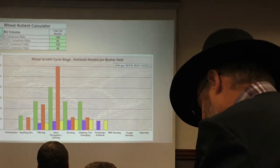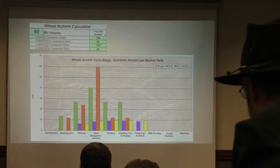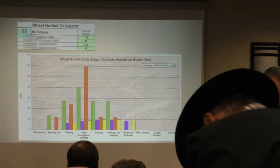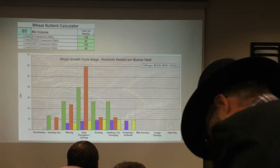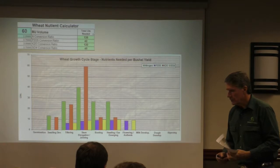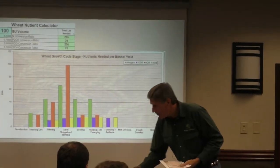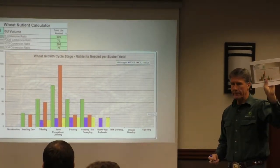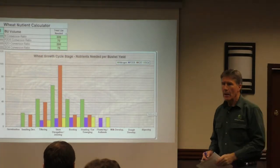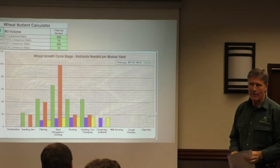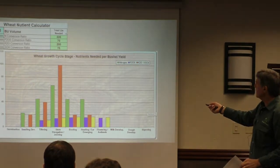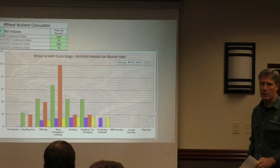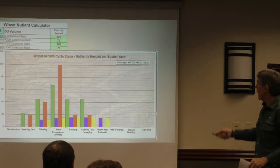Here we are with this growth stage on wheat. Four or five years ago we put together what we call a crop nutrient calculator. If I want to set a target — say a hundred bushel wheat, which is a lofty goal for dry land — I look up how many nitrogen units, phosphate units, potassium units, and sulfur units are required per bushel, multiply that out, and it gives me a number.